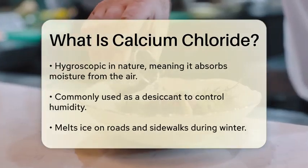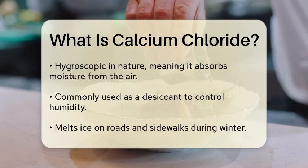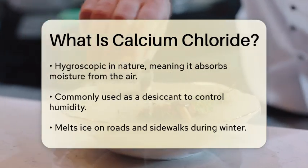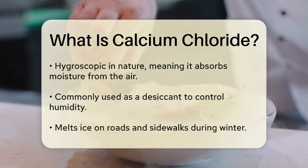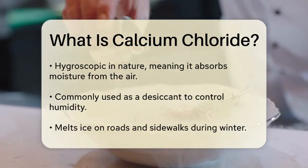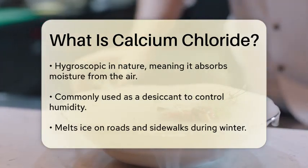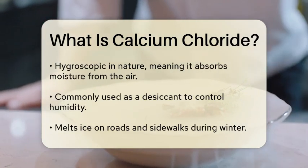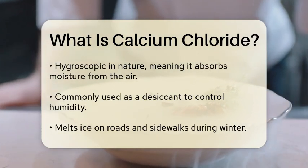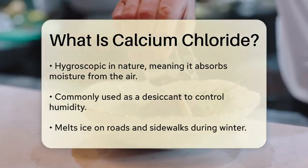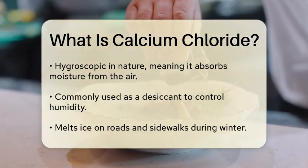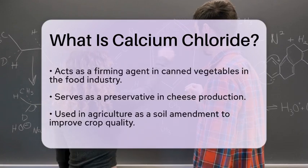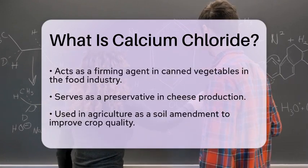In addition to its role in deicing roads and sidewalks, calcium chloride has several other applications. It is used in the food industry as a firming agent in canned vegetables and as a preservative in cheese production. In agriculture, it serves as a soil amendment to improve the quality of crops.